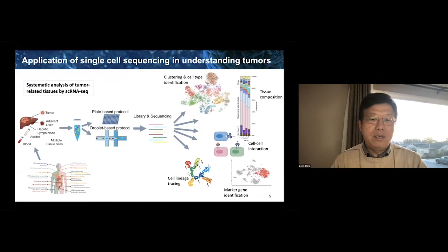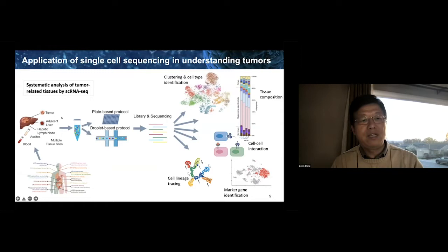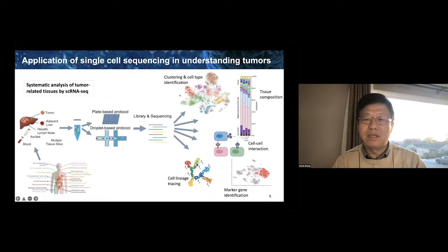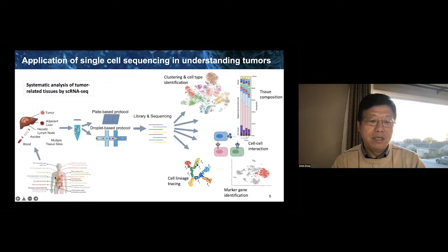Single-cell sequencing is extremely powerful. What we are doing is, for a given tumor type, we take multiple cancer-related tissues ranging from tumor-adjacent normal tissues, lymph nodes, ascites, blood, and so on, and profile them through single-cell sequencing to understand the unique cell types, tissue compositions, cell-cell interactions, and marker gene identification. We repeat this across multiple tumor indications to get a more systematic view of tumor-related tissues.